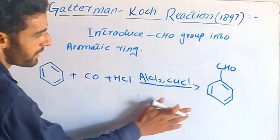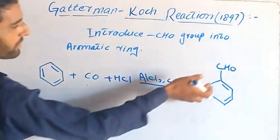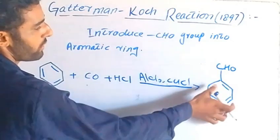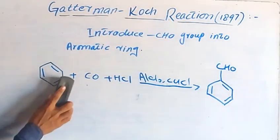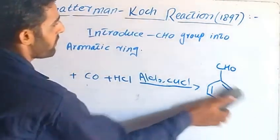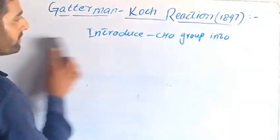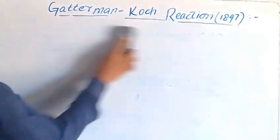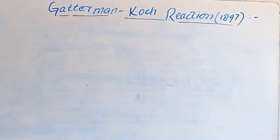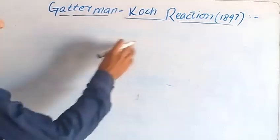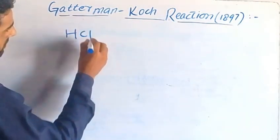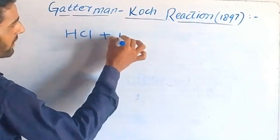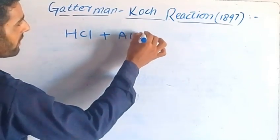Now we discuss the mechanism — how we introduce this CHO group into the benzene ring. Now we start the mechanism. First of all we draw the mechanism. First we take HCl plus the catalyst AlCl3.